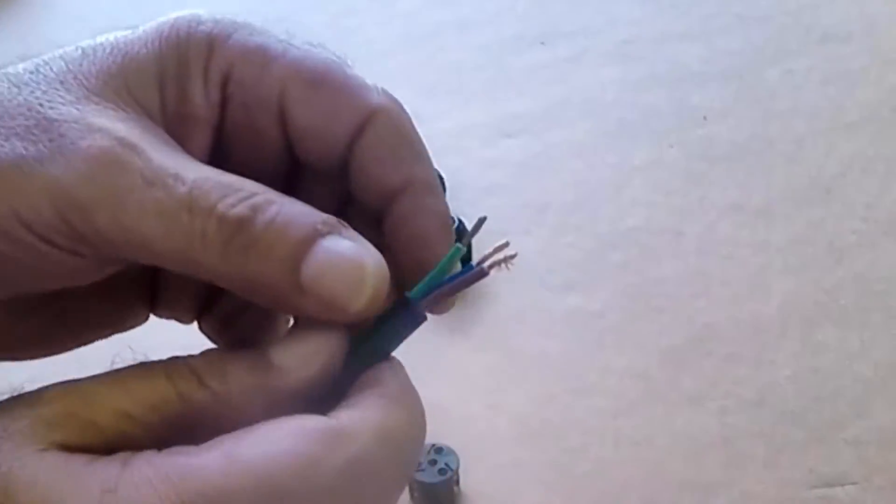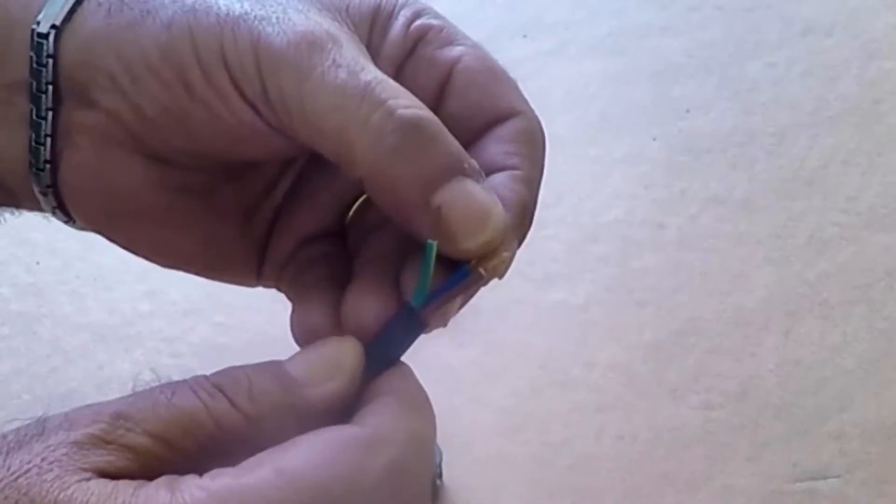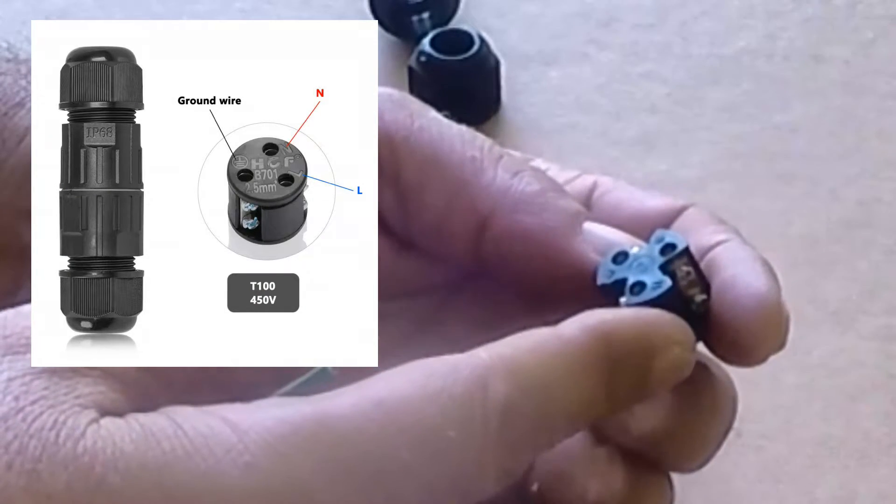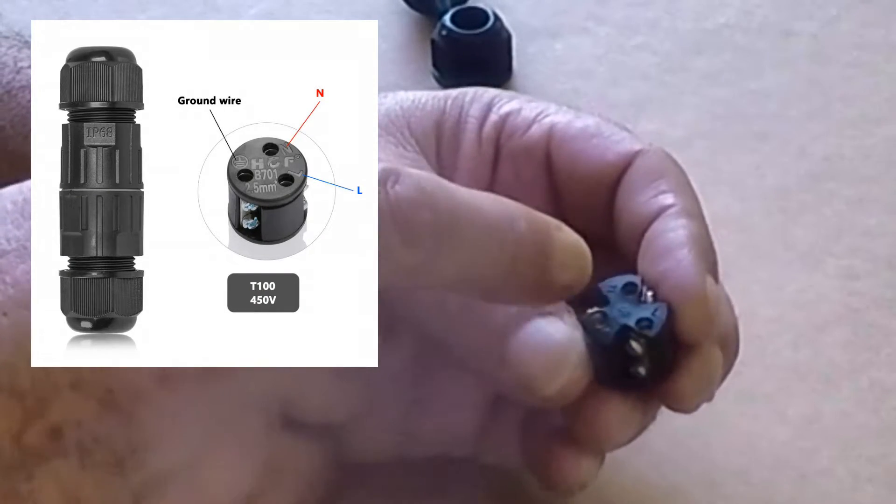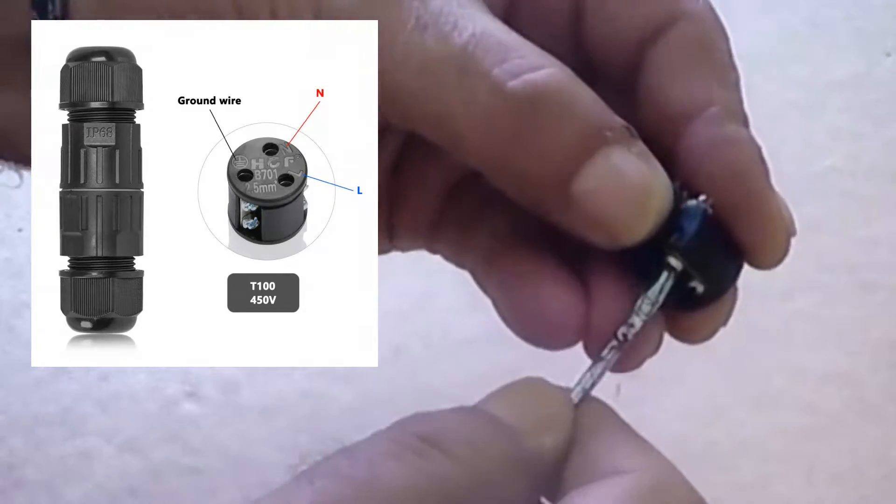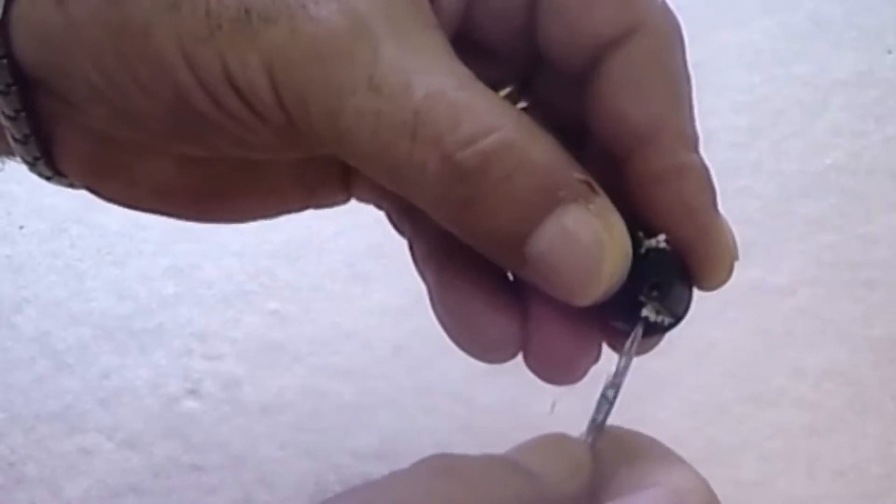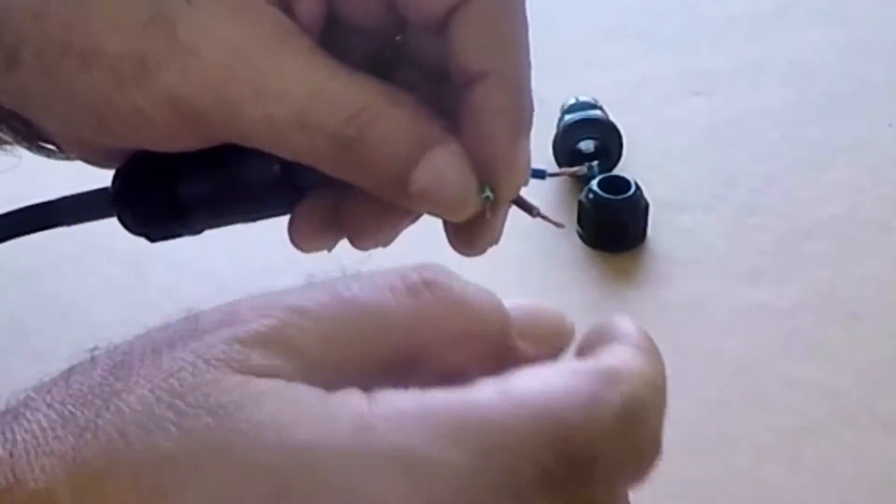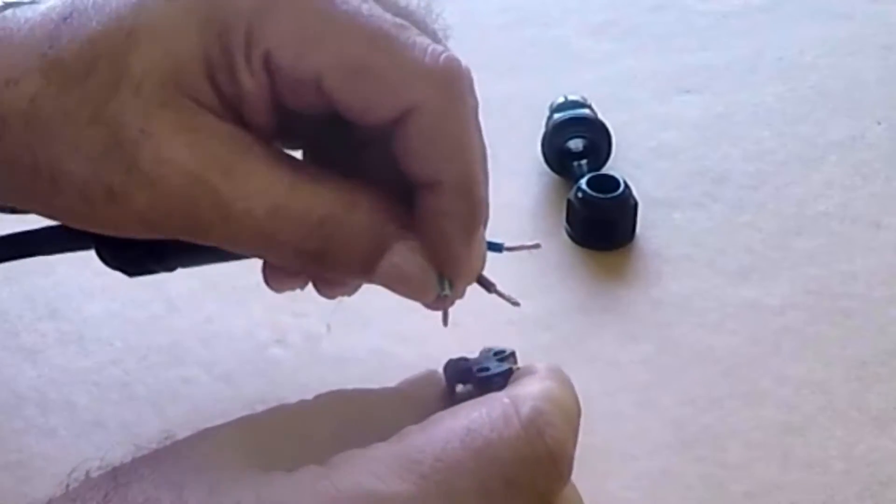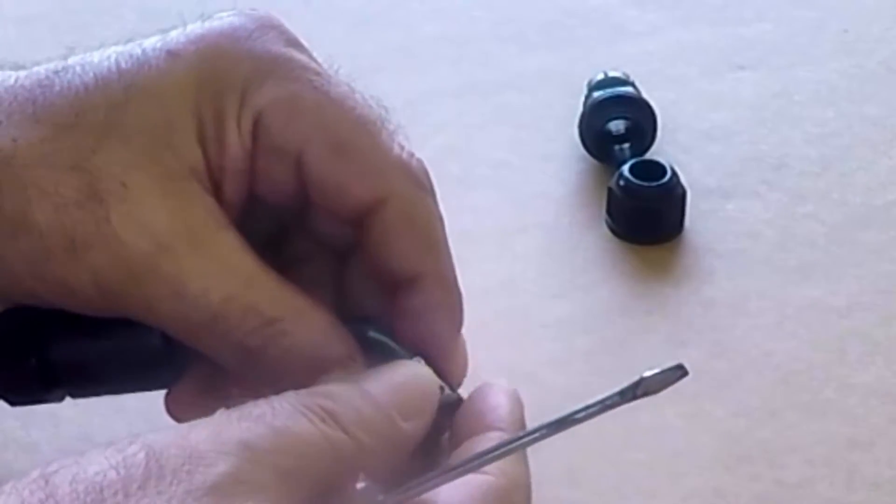Now the three wires could be inserted on one end of the socket. Just follow the markings on the socket to connect the wires ground, neutral, and live. Loosen all three screws so the wires fit inside them. Make sure the spliced wires are nicely twisted and insert all three wires and tighten well.